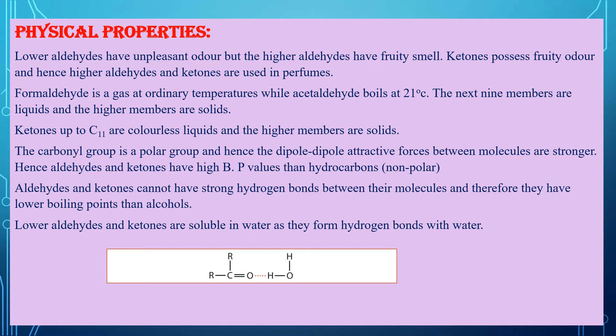Second point — looking at the physical state of carbonyl compounds: formaldehyde (HCHO), the first member of aldehydes, behaves as a gas at ordinary temperatures. The second member, acetaldehyde, boils at 21 degrees centigrade. The next nine members are liquids — that is, aldehydes up to nine carbons — and the rest are solids.